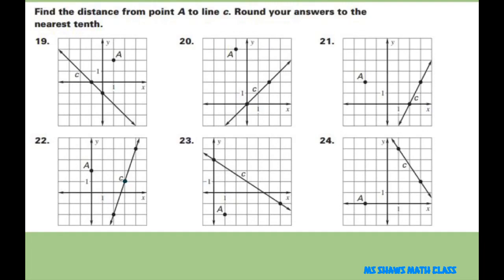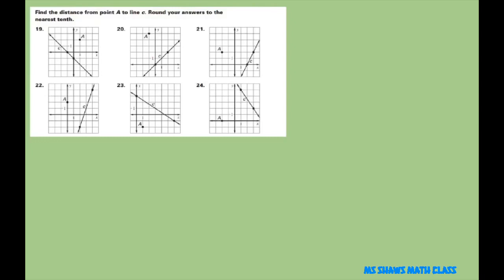I'm going to do the odd problems and I'll leave you to do the evens. However, I'll get you started on the evens and write the answers for them too. So let's get started. For number 19, the slope of line C equals rise over run, which is negative 1.